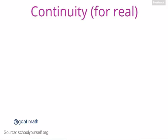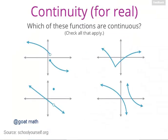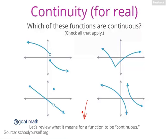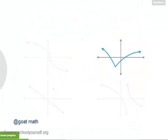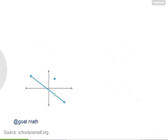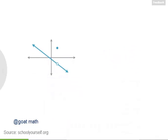Here we'll be digging deeper into continuity and discontinuities using limits. First, which of these functions is continuous? Click here if you'd like a refresher on what it means for a function to be continuous. This function is continuous because you can draw it without picking up your pen. Now let's take a closer look at this function over here, which was not continuous.